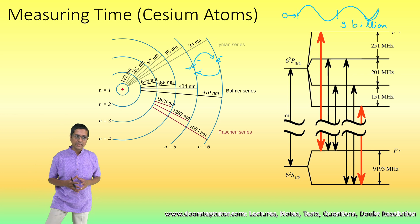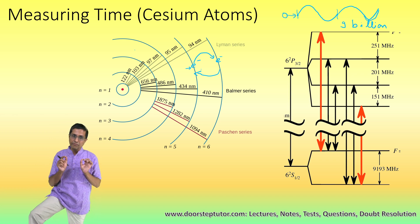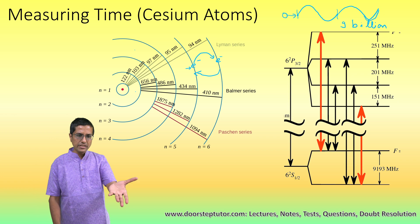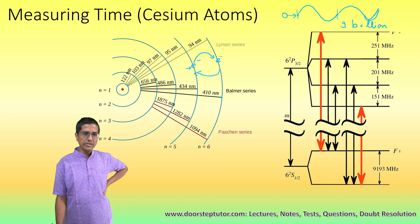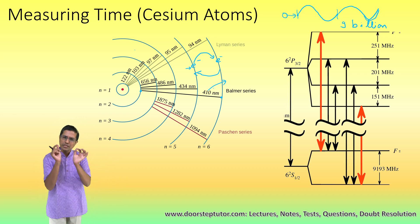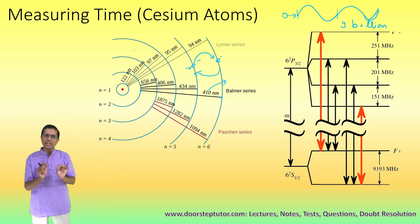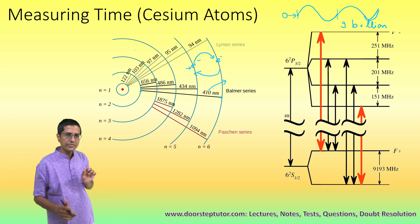These photons have very specific frequencies. For example, in the case of a hydrogen atom, when the electron comes down from one energy level to another, it emits radiation of 410 nanometers — a very specific radiation. In the case of the cesium atom...